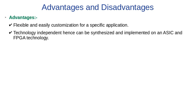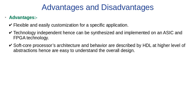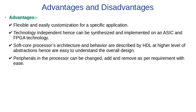Soft core processors are technology independent. Hence, they can be synthesized and implemented on both ASIC and FPGA technology. The soft core processor architecture and behavior are described by HDL at a higher level of abstraction, making it easy to understand for the designer. Peripherals in the processor can be changed — we can add or remove them as per requirement very easily. In soft core processors, we have reduced obsolescence risk.